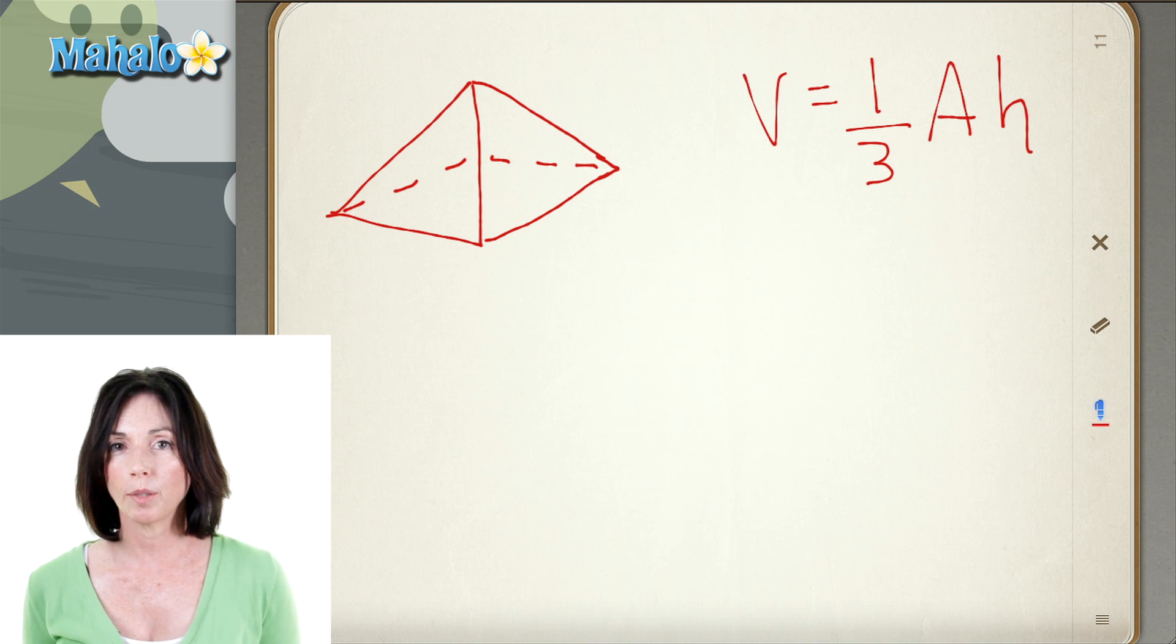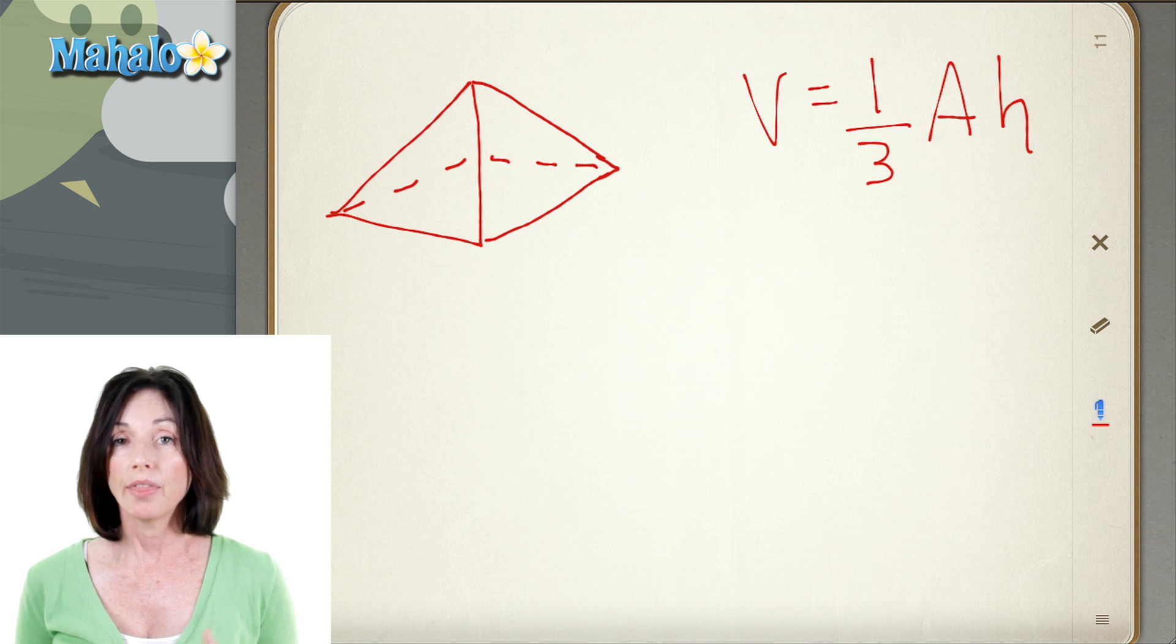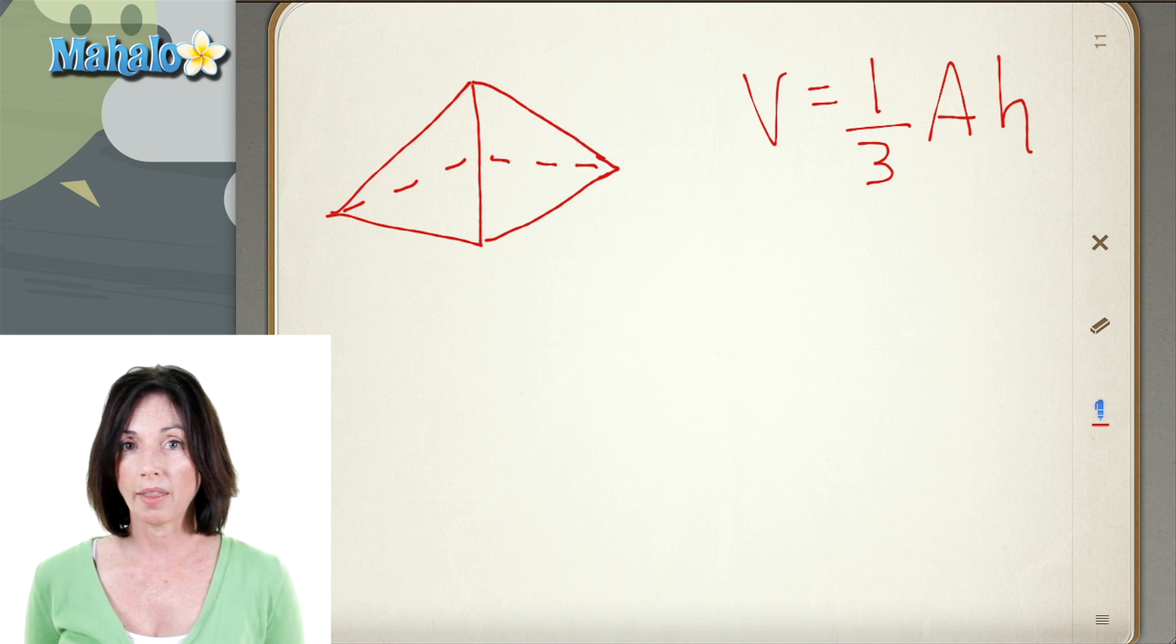So you have to really look at the pyramid and determine what shape its base is. Then you find that area, and then you multiply it by the height.